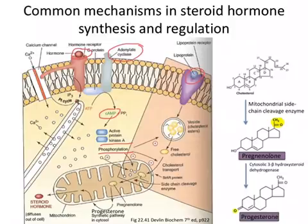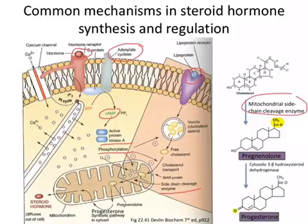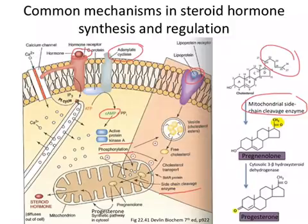That cholesterol is then brought into the mitochondria, and side-chain cleavage enzyme catalyzes the first step. The side-chain of cholesterol is cleaved off, resulting in pregnenolone. The pregnenolone then diffuses out of the mitochondria, and the next common step is the production of progesterone in the cytosol. The progesterone is then further metabolized by several different enzymes, many of which are cytochrome P450s.